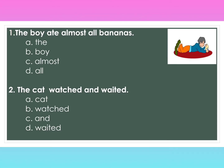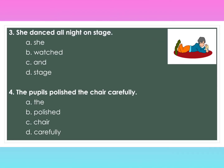Number one: The boy ate almost all bananas. A. the, B. boy, C. almost, D. all. Number two: The cat watched and waited. A. cat, B. watch, C. and, D. waited. Number three: She danced all night on stage. A. she, B. danced, C. all, D. stage. Number four: The pupils polished the chair carefully. A. the, B. polish, C. chair, D. carefully.